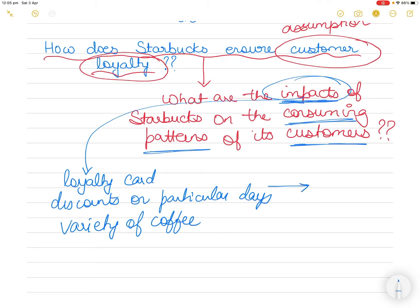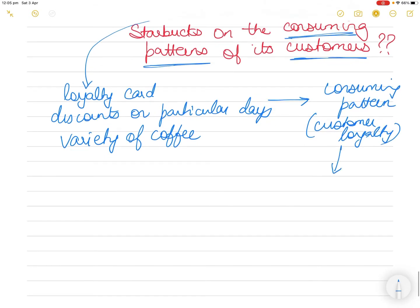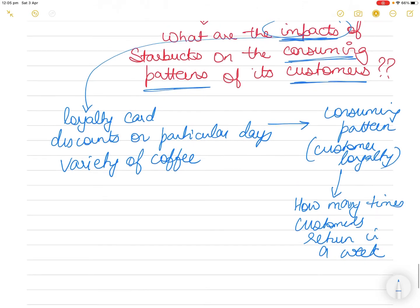The other variable is the consuming pattern. The consuming pattern could be defined as customer loyalty, and further this could be defined as how many times customers are returning in a week. So you have defined it. This is just going with the flow - I have not thought this question out from any of my research. You've got the definition of the variables, you don't know the answer to it, and you are going to conduct research for which you do not know the answer yet.